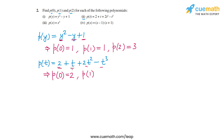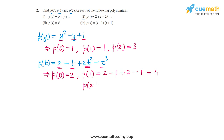For p(1): 2 plus 1 plus 2 times 1 squared minus 1 cubed, which equals 2 plus 1 plus 2 minus 1, so p(1) equals 4. For p(2): 2 plus 2 plus 2 times 2 squared minus 2 cubed, that's 2 plus 2 plus 8 minus 8, so p(2) is also equal to 4.